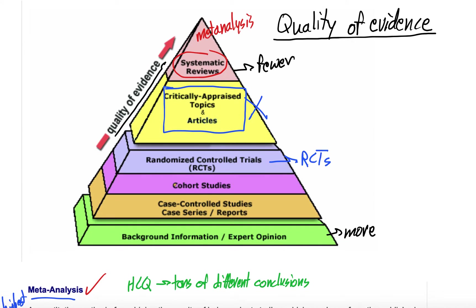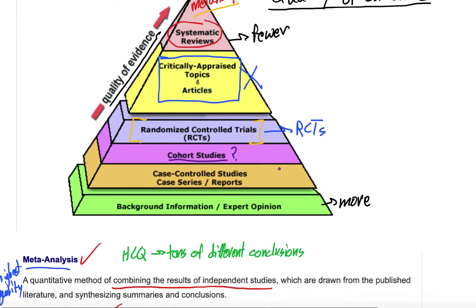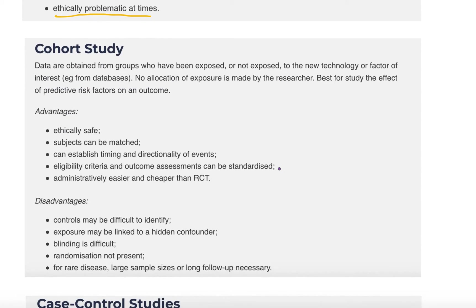So on our pyramid we've now covered systematic reviews, meta-analyses, and randomized control trials. Next are cohort studies. Those following the channel have probably seen a lot of these, but I haven't fully explained what a cohort study is. It's the next highest level of evidence below RCTs. A cohort study is when data is obtained from groups who have been exposed or not exposed to a new technology, factor of interest, or medication, with no allocation of exposure made by the researcher.